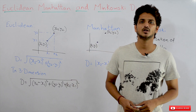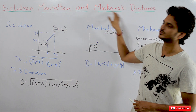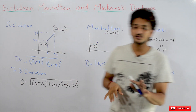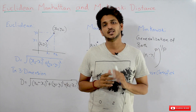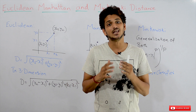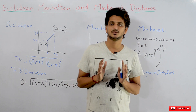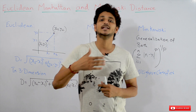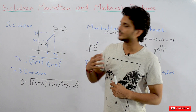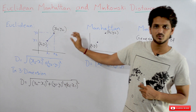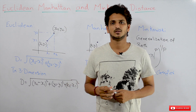Welcome to Learning Monkey. In this class we will discuss Euclidean distance, Manhattan distance, and Minkowski distance. In our previous classes we discussed the K-Nearest Neighbors model, which depends on calculating distance. Not only KNN — many machine learning models depend on calculating distance, so understanding different distance calculation formulas will help a lot in machine learning.